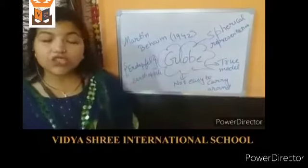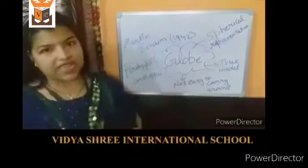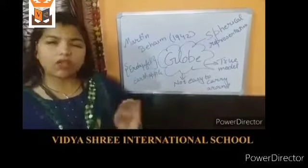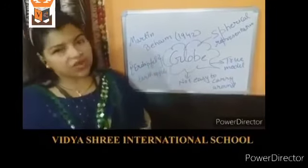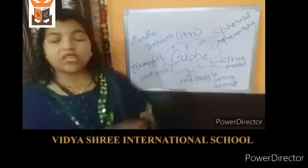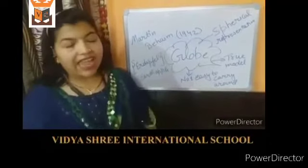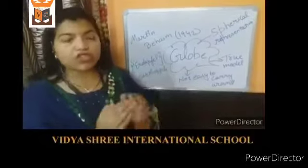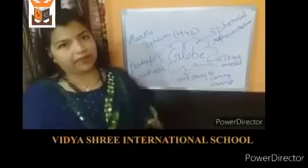The globe is the true model of Earth because it shows the continents and the countries in actual size. The size of oceans, seas, all things in actual size. But there are some disadvantages of globe as well. First, it is not easy to carry around, and we cannot see or watch more details on a globe at a time.